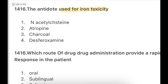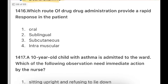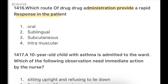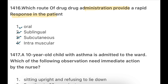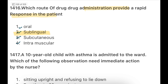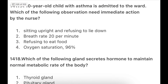Next: The antidote used for iron toxicity — which antidote is used for iron toxicity? Then: Which route of drug administration provides a rapid response in the patient? Options: oral, sublingual, subcutaneous, intramuscular. The answer is sublingual. Sublingual delivers the medicine directly into the bloodstream, and the response is obtained within a few seconds — the patient gets a rapid response to the medication.